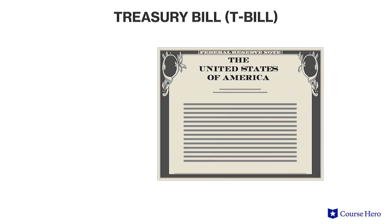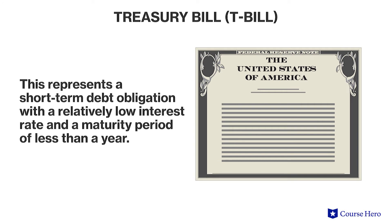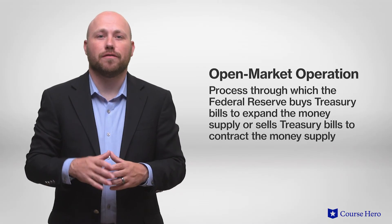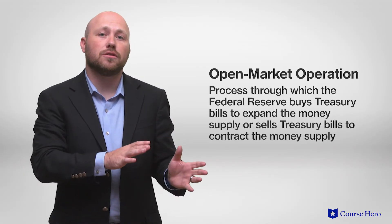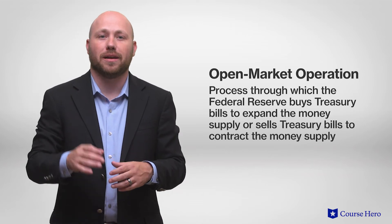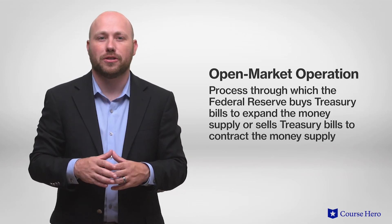The Fed's interventions in the economy are conducted through policy tools. One type of intervention involves a treasury bill, which is a security issued by the U.S. Treasury Department representing a short-term debt obligation with a relatively low interest rate and a maturity period of less than a year. The process through which the Federal Reserve buys treasury bills to expand the money supply, or sells treasury bills to contract the money supply, is known as an open market operation.